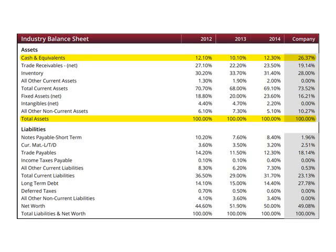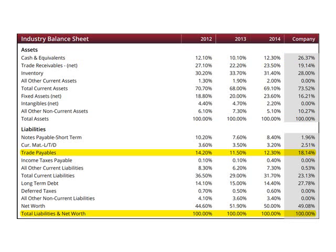To help interpret the data, the row for cash and equivalents is highlighted. Note the percentage of total assets made up by this account for both the industry and the company. For the liabilities section, trade payables is highlighted — notice the percentage of total liabilities and net worth made up by this account for both the industry and the company.